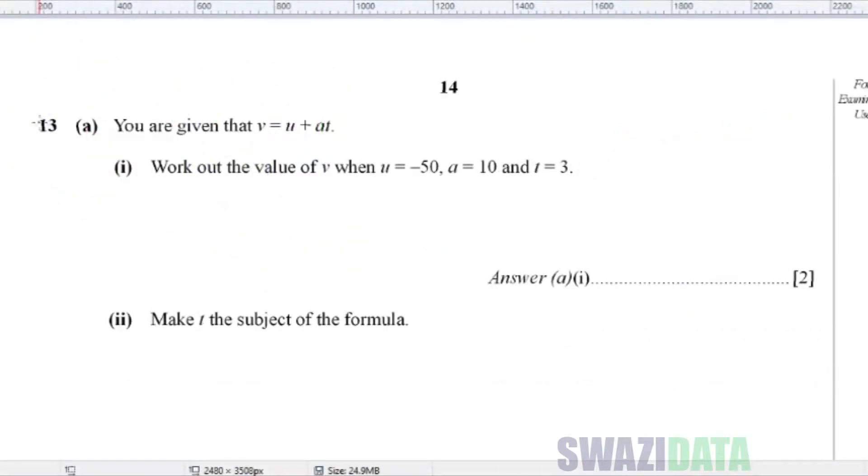Next is question number 13, Part A. It says you are given that V is equal to U plus A T. Part 1: Work out the value of V when U is equal to negative 50, A is equal to 10, and T is equal to 3.